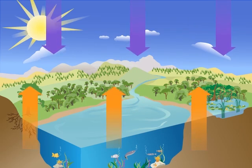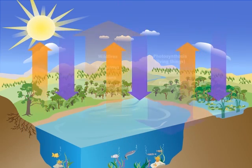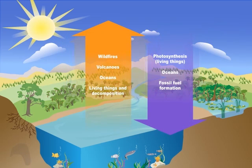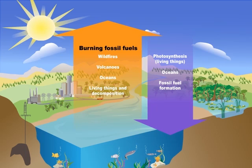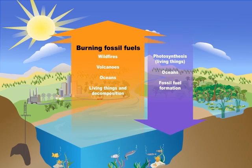All these different parts of the carbon cycle should be in balance, but people's activities are disrupting the cycle and knocking it out of balance. When we burn coal, oil, and gas to create energy, we're taking carbon from deep underground and putting it into the atmosphere faster than natural processes can take it away. After all, it took millions of years for those fossil fuels to form.